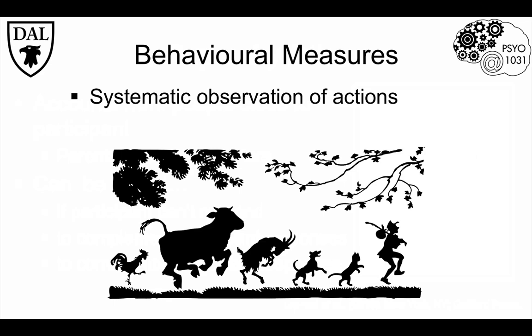Behavioral measures, as the name suggests, are measures of observable behavior. Because this type of measure is not dependent on language like self-reports, there are no restrictions on the types of participants used. In order to ensure that collected data is meaningful and consistent, it is important to create clear operational definitions of the specific actions being recorded.